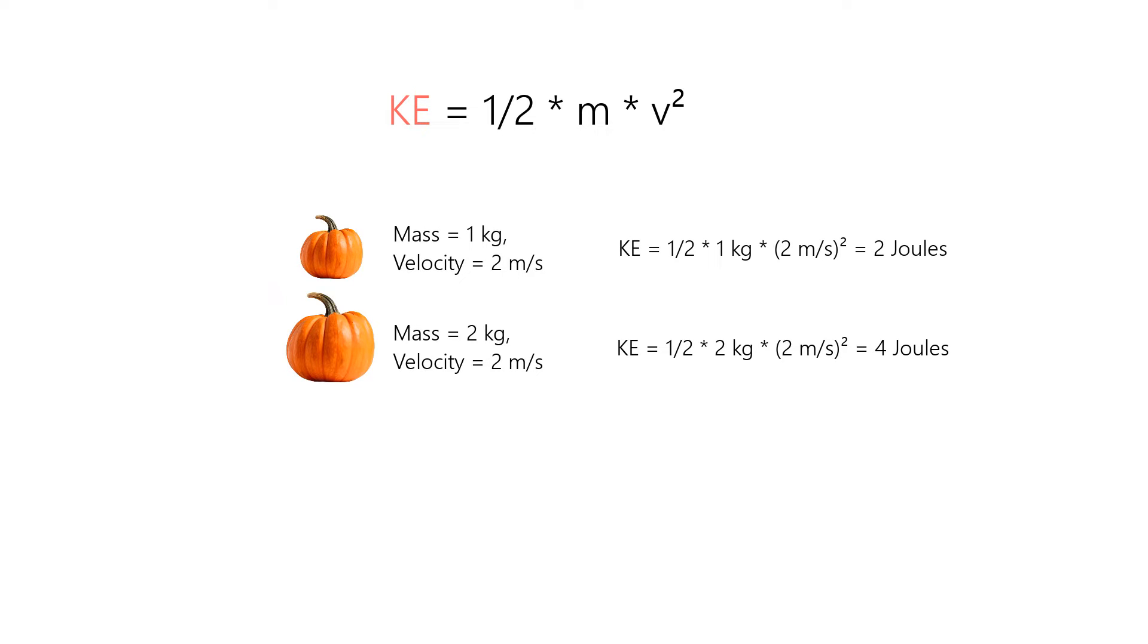However, if you double the velocity while keeping the mass same, the kinetic energy becomes 1/2 × 1 × (4)² that equals eight joules. So you see, a change in velocity has a much larger effect on the kinetic energy of the object than a change in mass.